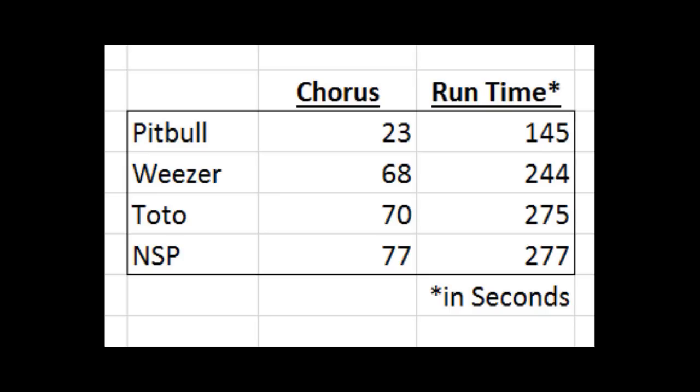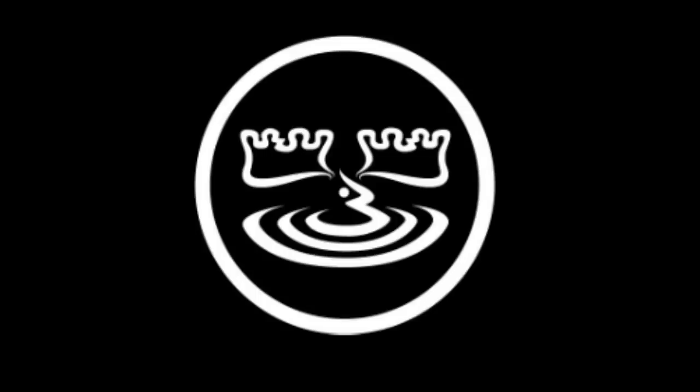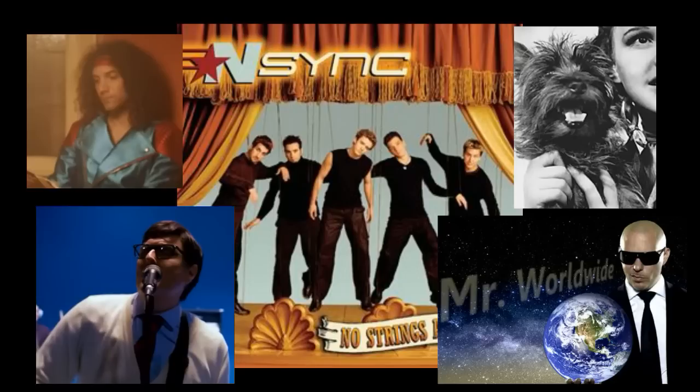The first step was easy. I pulled the respective videos up on YouTube and determined the length of each song and when the first chorus kicks in, as shown on the table on your screen. Note that for ease of calculation, we're only trying to sync the first chorus in each song. The next step is to find a point of synchronization, or congruence, between these four songs, which ended up being the tricky part.